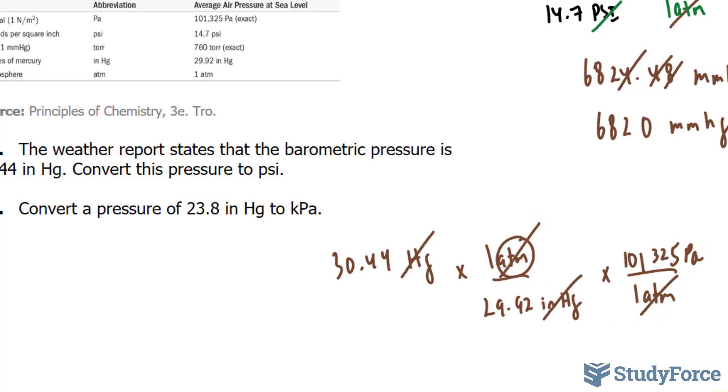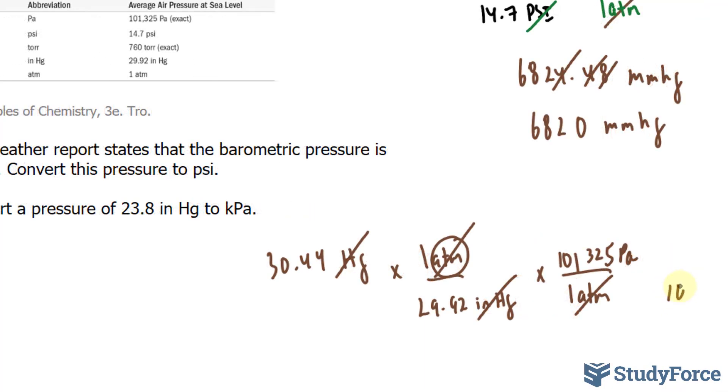This cancels out the atmospheres, but I need to report it in kilopascals. So to go from pascals to kilopascals, 1,000 pascals is equal to 1 kilopascal. Watch what happens. This cancels out with this, and now we use our calculator.